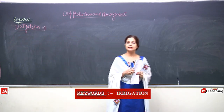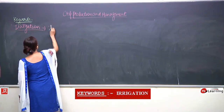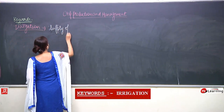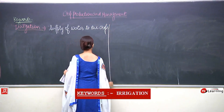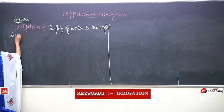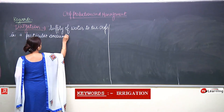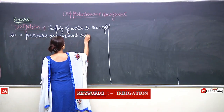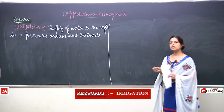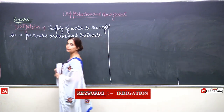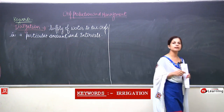Here I have taken the next word which is irrigation. We can define irrigation as the timely supply of water to crops in a particular amount and intervals. Irrigation does not mean just supplying water at any time — it means supply of water in the right quantity, at the right time, and in the right way. This is very important and is known as irrigation.